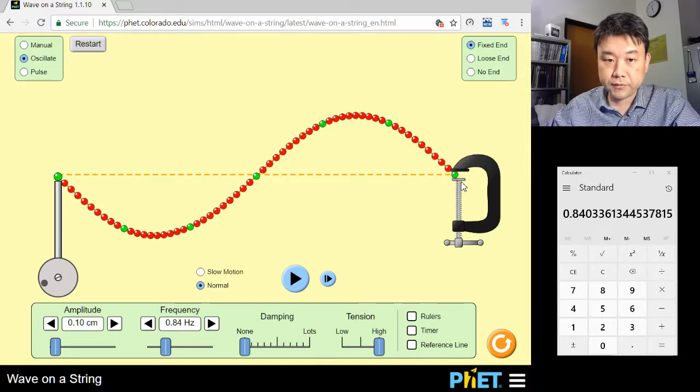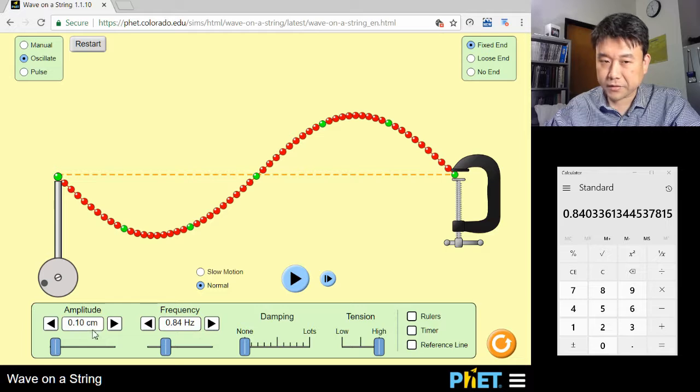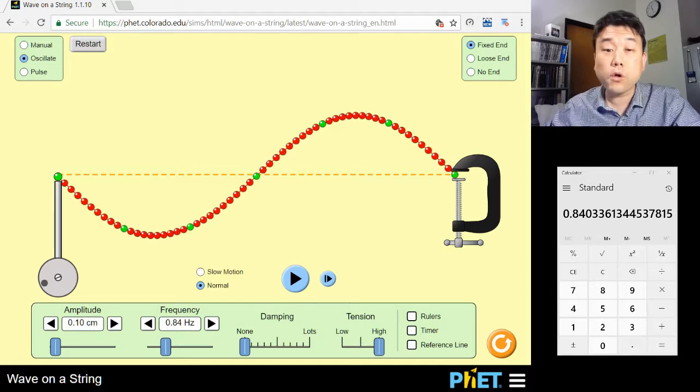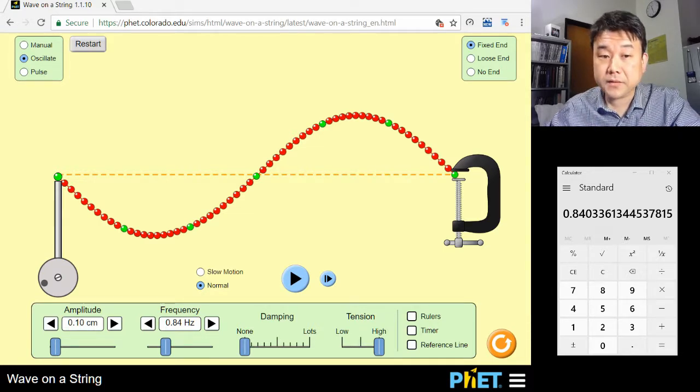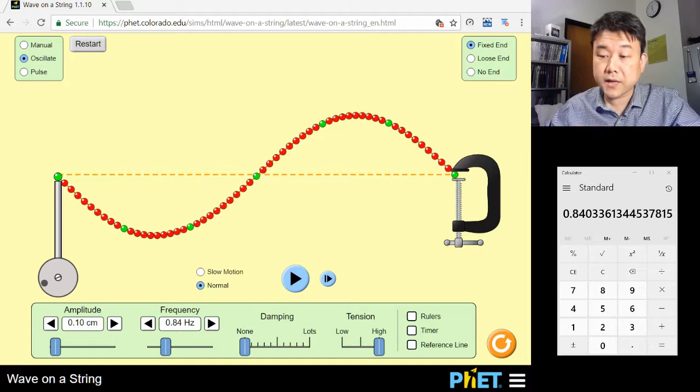One end is tied down, and the other end is oscillating, but not that much. And this condition, getting nodes at both ends, it does not happen at all frequencies. The special frequencies where it happens are the resonance frequencies. And at those resonance frequencies, we get the standing waves.